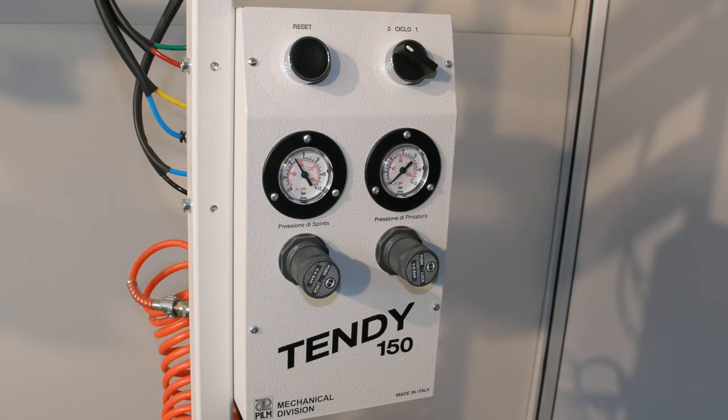In the top part of the command, there are two round buttons. Above the left button is the word RESET. This button is needed to bring the horizontal pinching bar to its original position. Above the right button are the words 0, Chiclo 1. The button is turned on by turning it clockwise, or rather to position 1, and is switched off in the reverse manner.